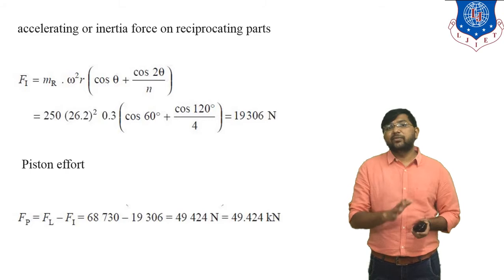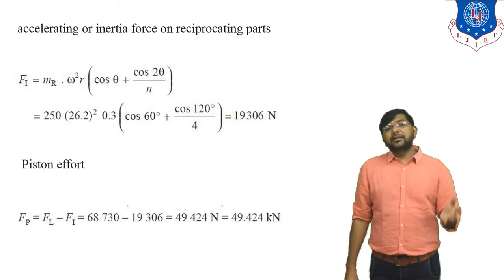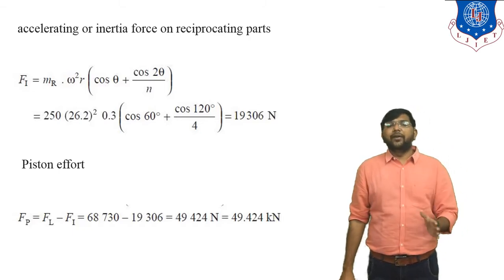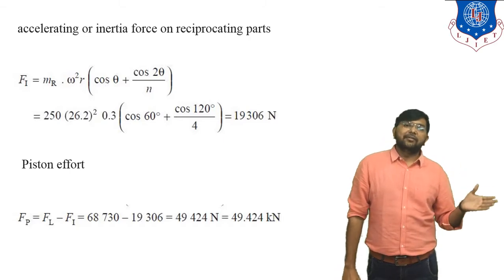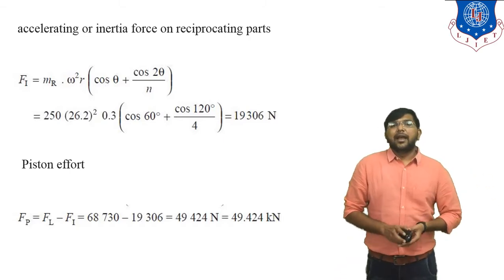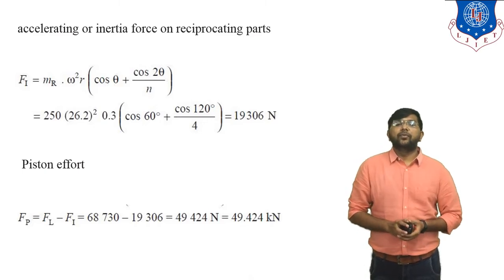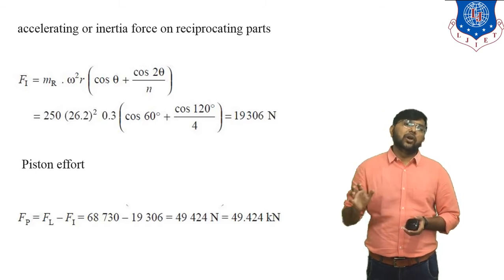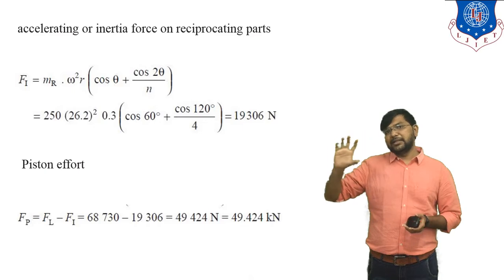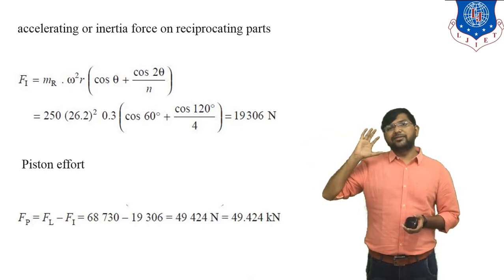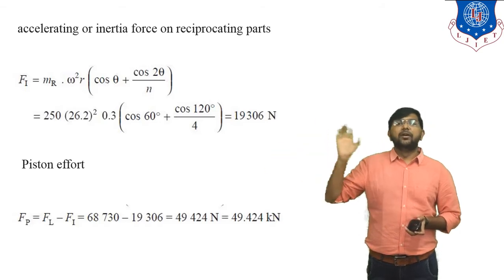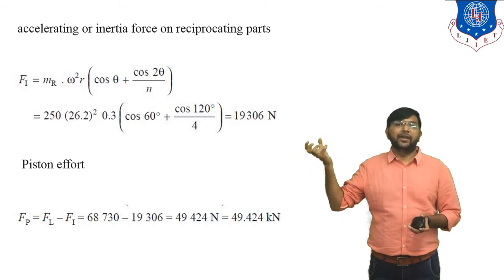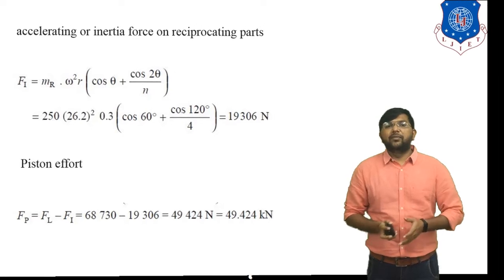Piston effort equals gas force minus inertia force, because inertia force always acts in the opposite direction. F_p = F_l − F_i = 68,730 − 19,306 = 49,424 N ≈ 49.424 kN. Since this is a horizontal engine, we neglect the weight of the piston. This is the piston effort.